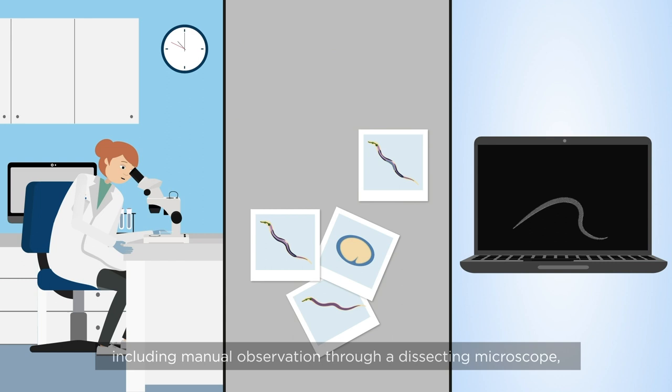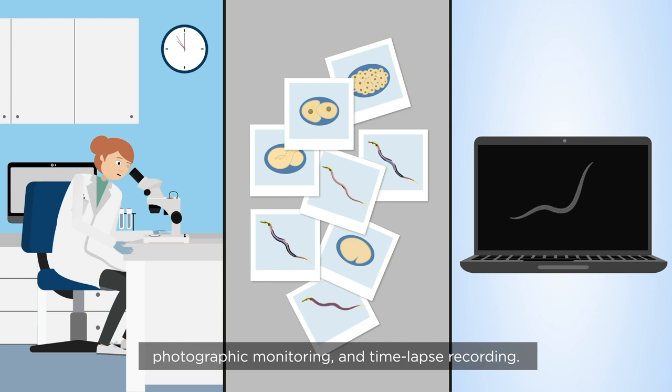Survival analysis of C. elegans can be performed in several ways, including manual observation through a dissecting microscope, photographic monitoring, and time-lapse recording.